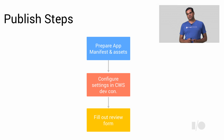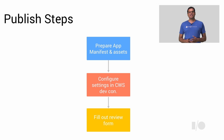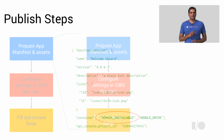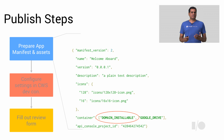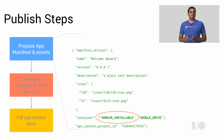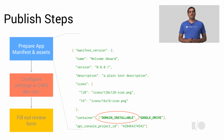Publishing involves three main steps. You have to prepare your app manifest and associated assets. Then you have to configure publishing settings in the Chrome Web Store. And then you have to submit an app review form. The app manifest tells us more information about your app and should look very similar to the Chrome Web Store app manifest if you have published there before. The only difference is the domain installable container, as highlighted in this slide, which tells us that you are ready to publish your app to Google Apps for Business customers.